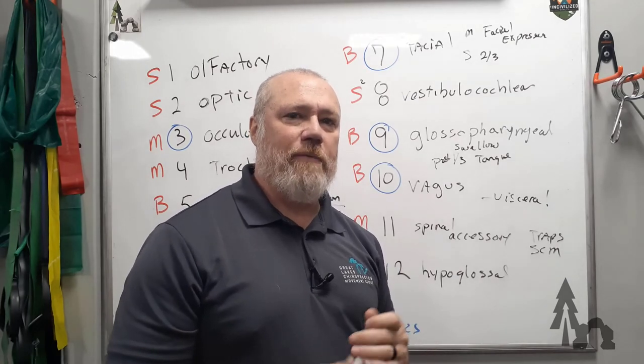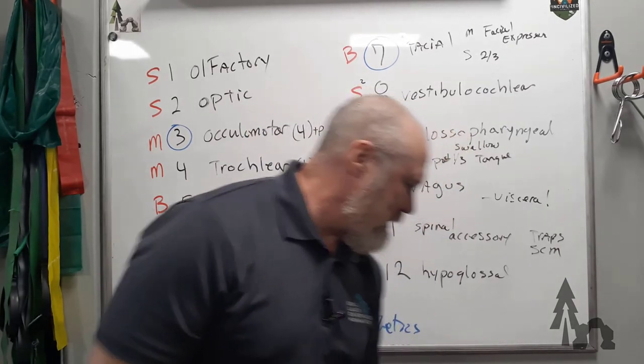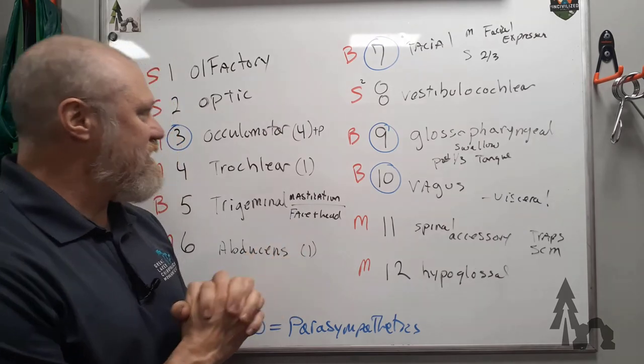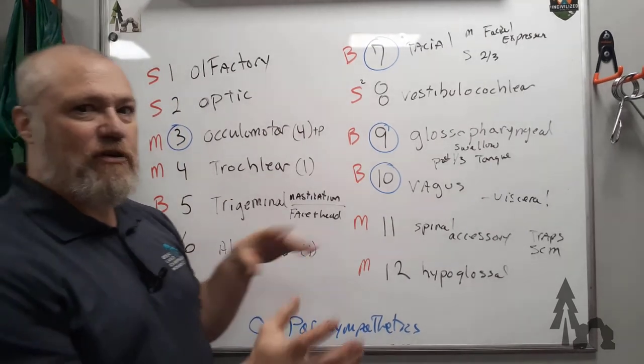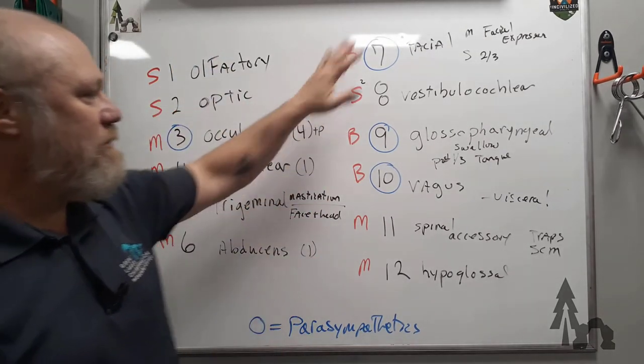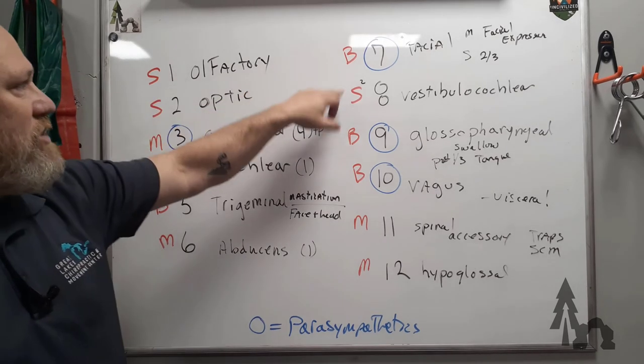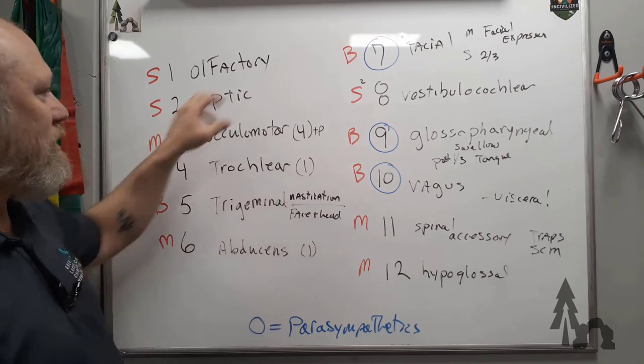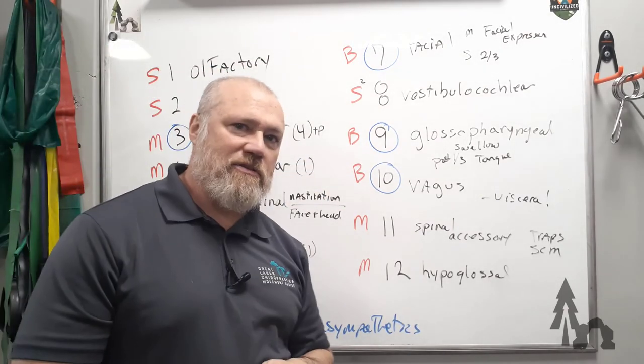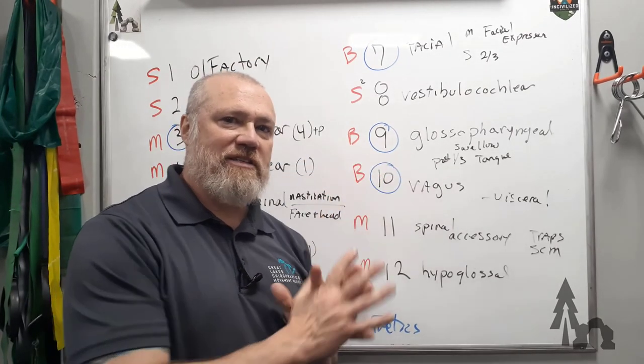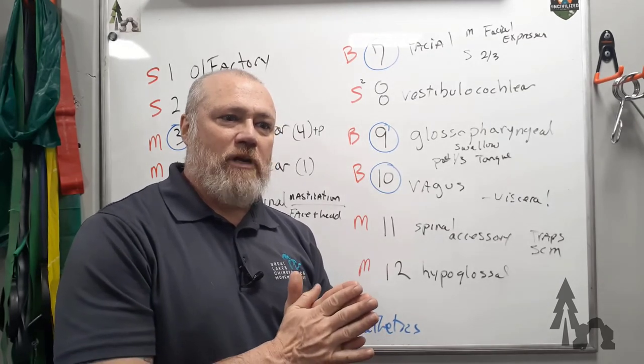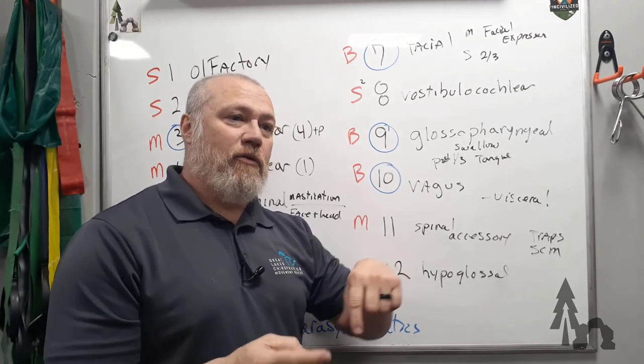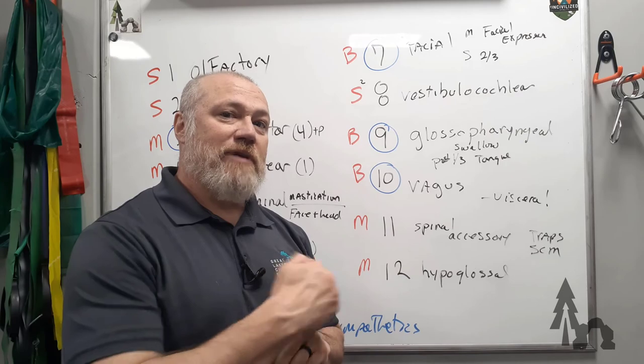So when we get into cranial nerve assessment, we'll be able to whip through these. But this is a quick way to remember the names and their functions: which ones are sensory, which ones are motor only, which ones contain both sensory and motor, and 3, 7, 9, and 10, which ones contain parasympathetic fibers. This is a good place to get started. Like the video and then look forward to when I find some time to knock out the twelve more detailed cranial nerves.